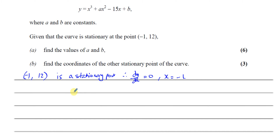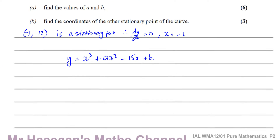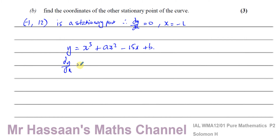Let me take the equation y equals x cubed plus ax squared minus 15x plus b, and differentiate this. So if I differentiate this, I get dy/dx is equal to 3x squared — multiply by the power, take 1 from the power — plus 2ax. Then minus 15: an x term just loses the x, because x to the power of 1 times 1 gives 15, and x to the power of 0 gives 1. Any constant term differentiates to 0, so b becomes 0.